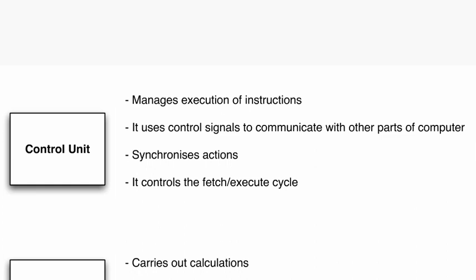So, the control unit. This manages execution of instructions. It uses control signals to communicate with other parts of the computer. It synchronizes actions and it controls the fetch-execute cycle. How can we remember this? Well, the control unit is in control — it has the word 'control' in it. It controls signals to communicate with other parts of the computer. It synchronizes everything and makes sure everything runs in time. 'Manages' is another type of control word, and the last point again says it controls the fetch-execute cycle.